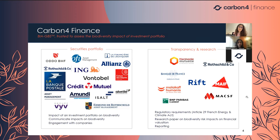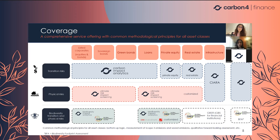Article 29 is the first step on the way toward transparency, but with the different databases you can also use them to create specific biodiversity or climate funds, model your risk, and use the data for engagement strategies. In terms of coverage, we cover listed corporates, sovereign bonds, green bonds, loans for banks, private equity, real estate, infrastructure, and directly corporates — which is very important for Article 29 — to cover a large part of your portfolio across different risks and strategies.